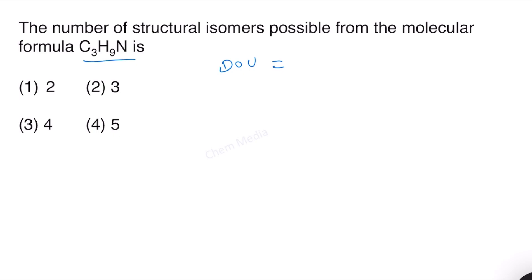If the degree of unsaturation value comes as 0, that means it is a completely saturated elemental composition and no double bonds and rings are possible.